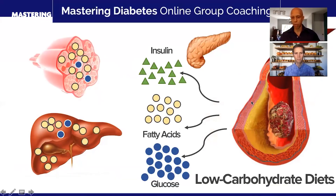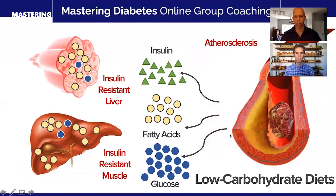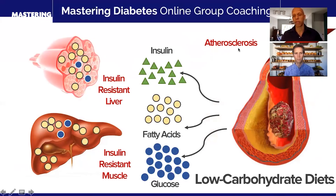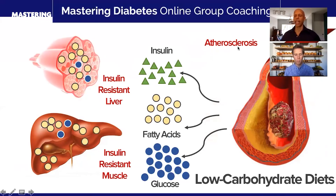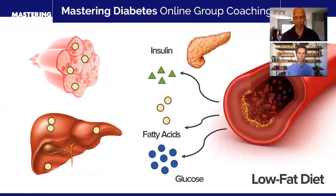When this process happens, you end up with a triple whammy. You get insulin-resistant muscle, insulin-resistant liver, and then you can end up developing atherosclerosis — which is hardening of blood vessels due to excess accumulation of fatty acids inside of your vasculature.